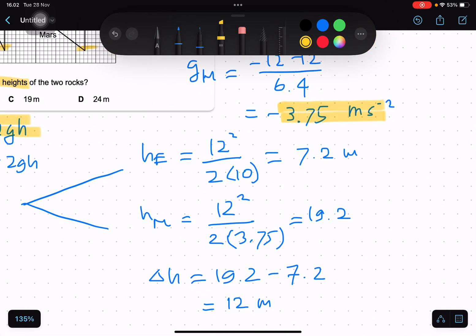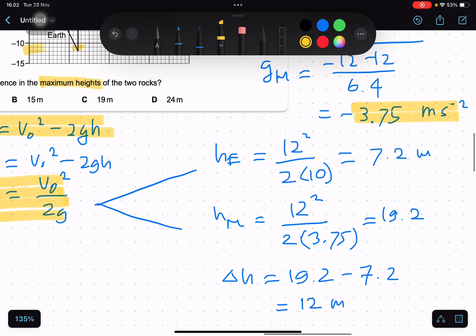On Earth, v₀ squared is 12 squared divided by 2 times g which is 10, so we get 7.2 meters.